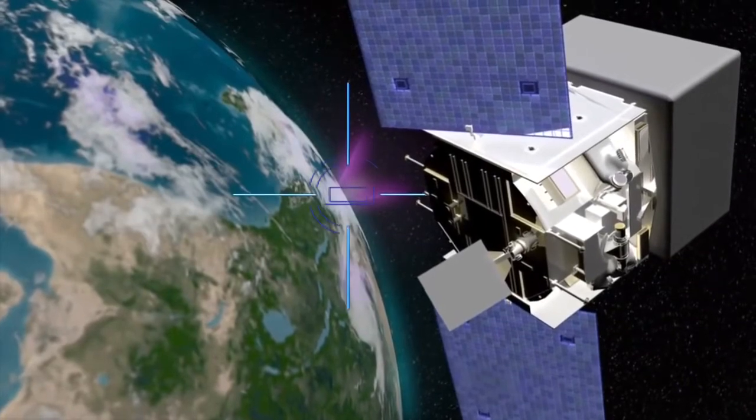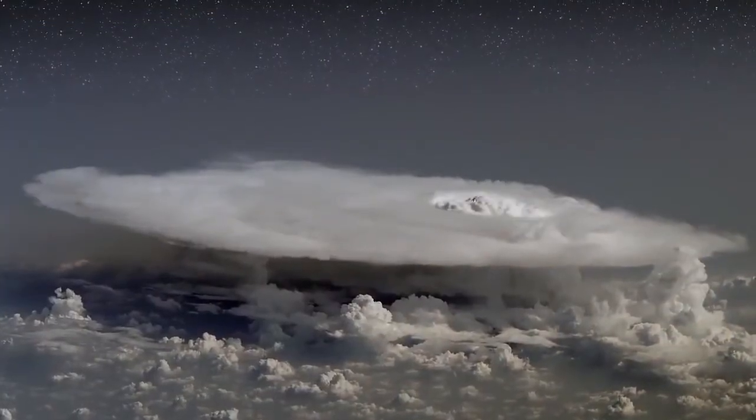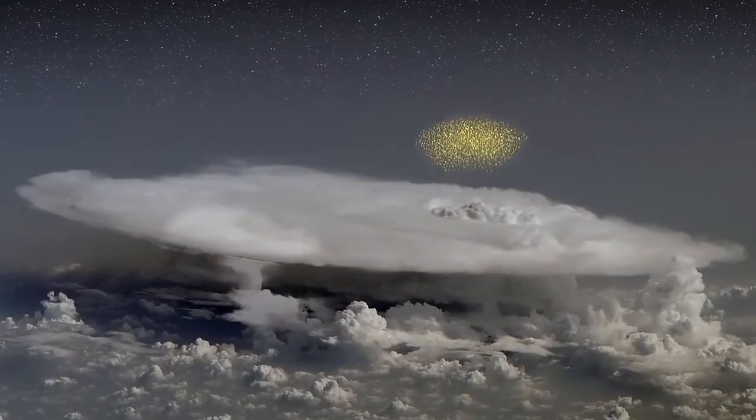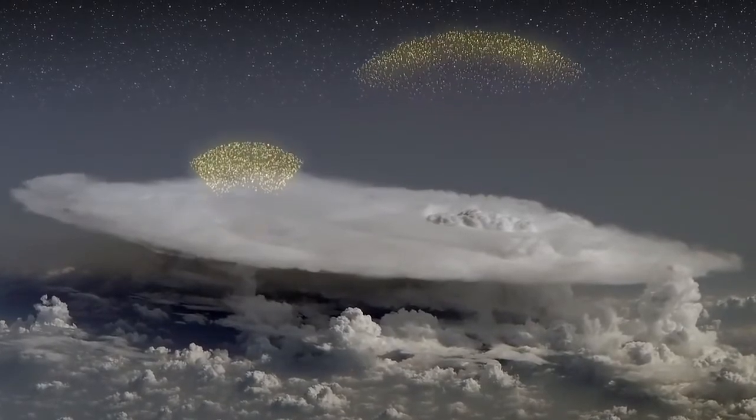Scientists believe that the TGF process begins in a thunderstorm's intense electrical field. Electrons within this field become accelerated upward. Above the storm, where the air is thin, the electrons can ramp up to speeds nearly as fast as the speed of light. When these ultra-fast electrons encounter an atom, they emit gamma rays.